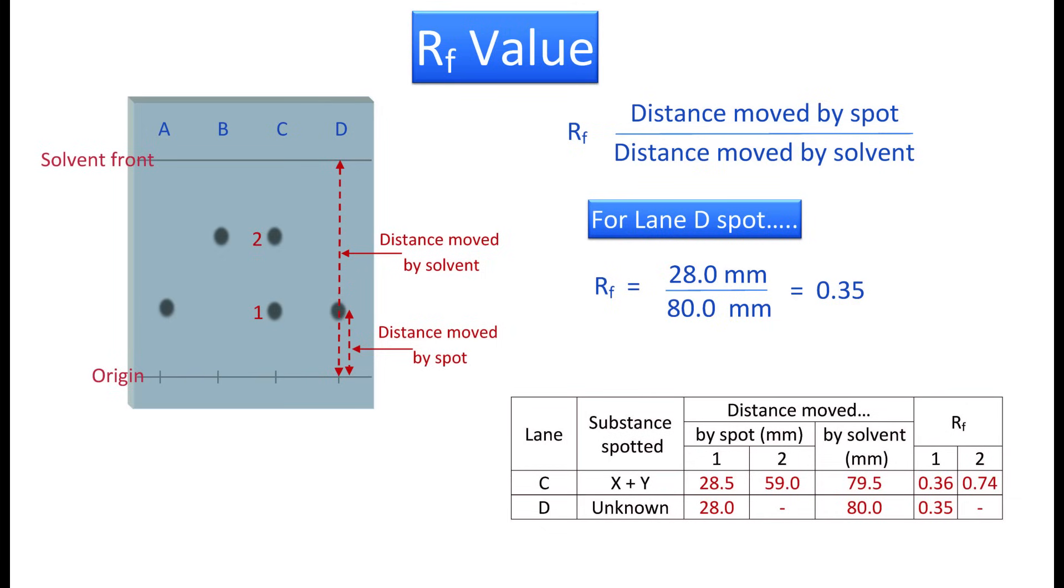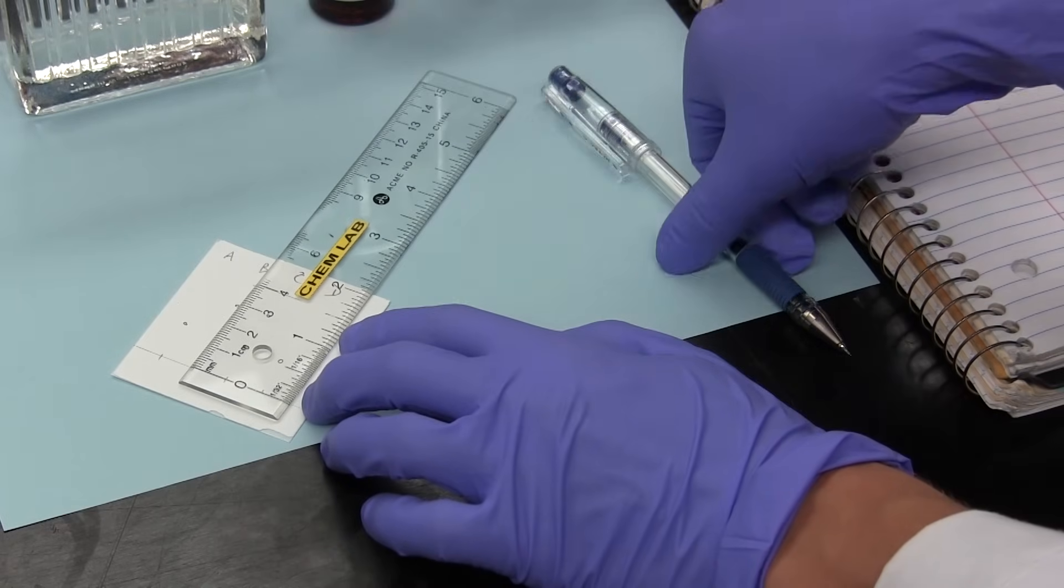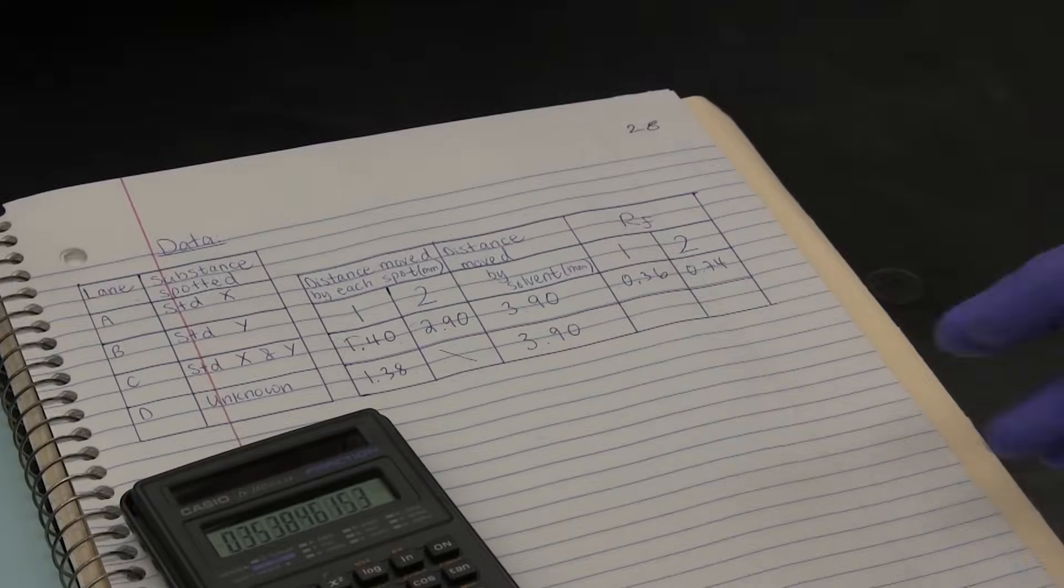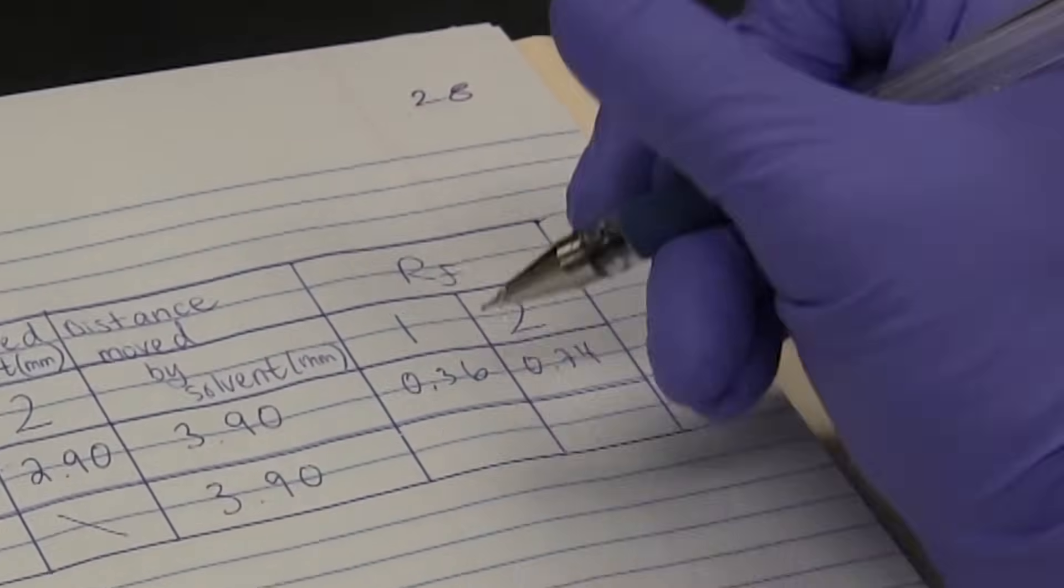In this example, the RF of 0.35 for the single spot in lane D compares favorably to the RF of standard X in lane C, so we can confirm that the unknown was in fact compound X. Here we see the measurements being made and recorded in the notebook. RF values calculated and also recorded.